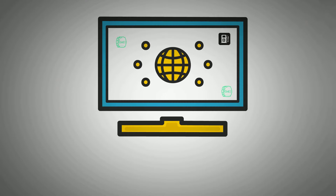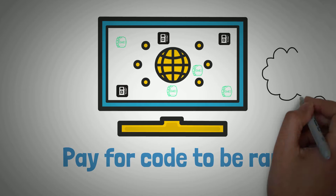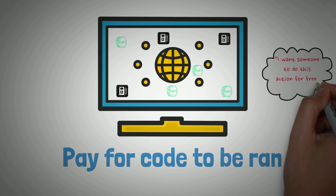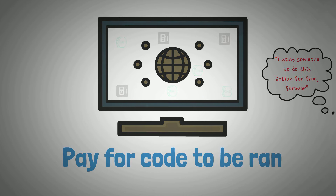GWEI and gas were actually implemented into the Ethereum network so people had to pay for code to be run. Imagine if you could write a piece of code that said you want someone to do this action for free forever. Without a gas limit and a GWEI price, someone could actually write code that ran on forever, ruining the entire blockchain.